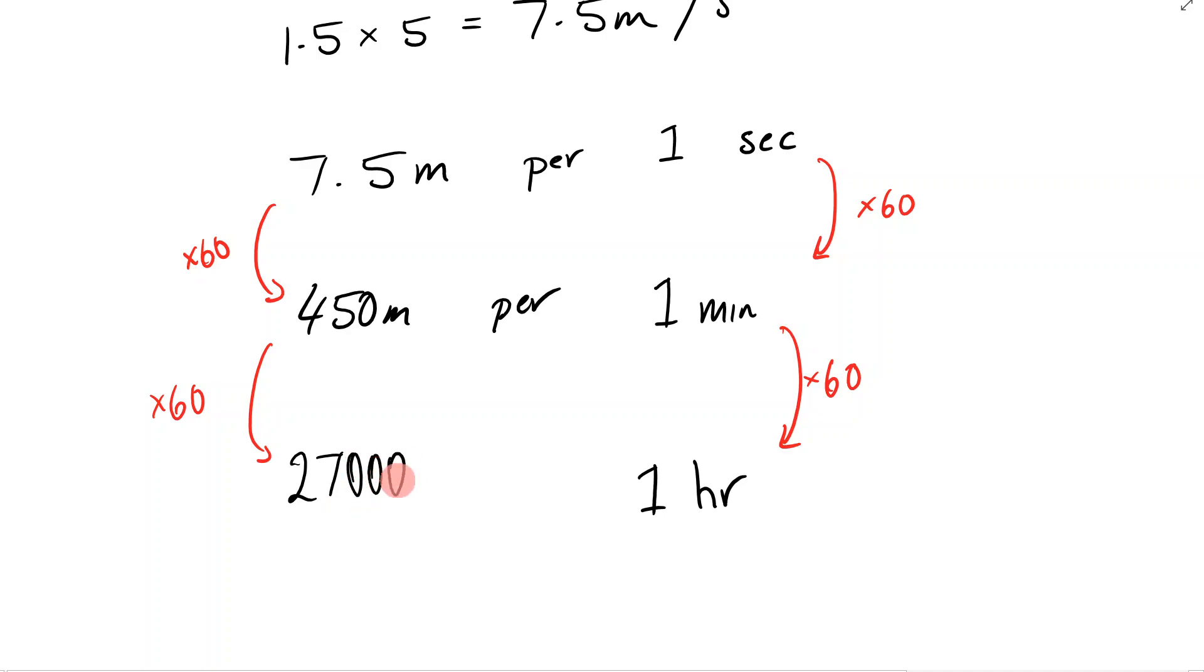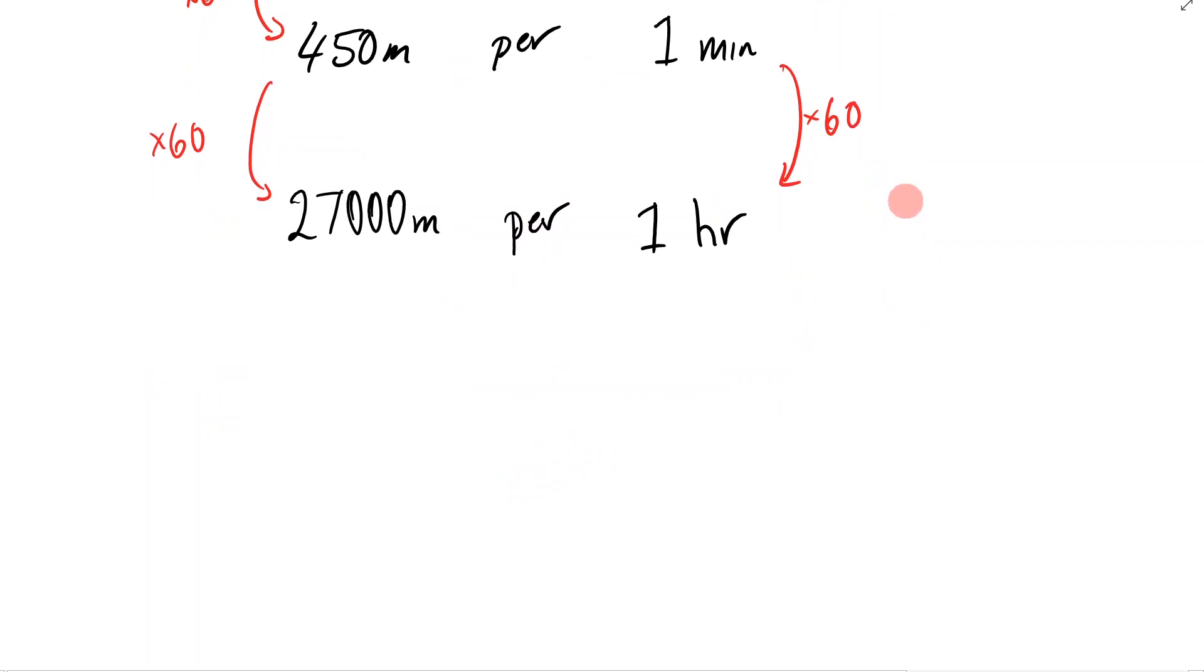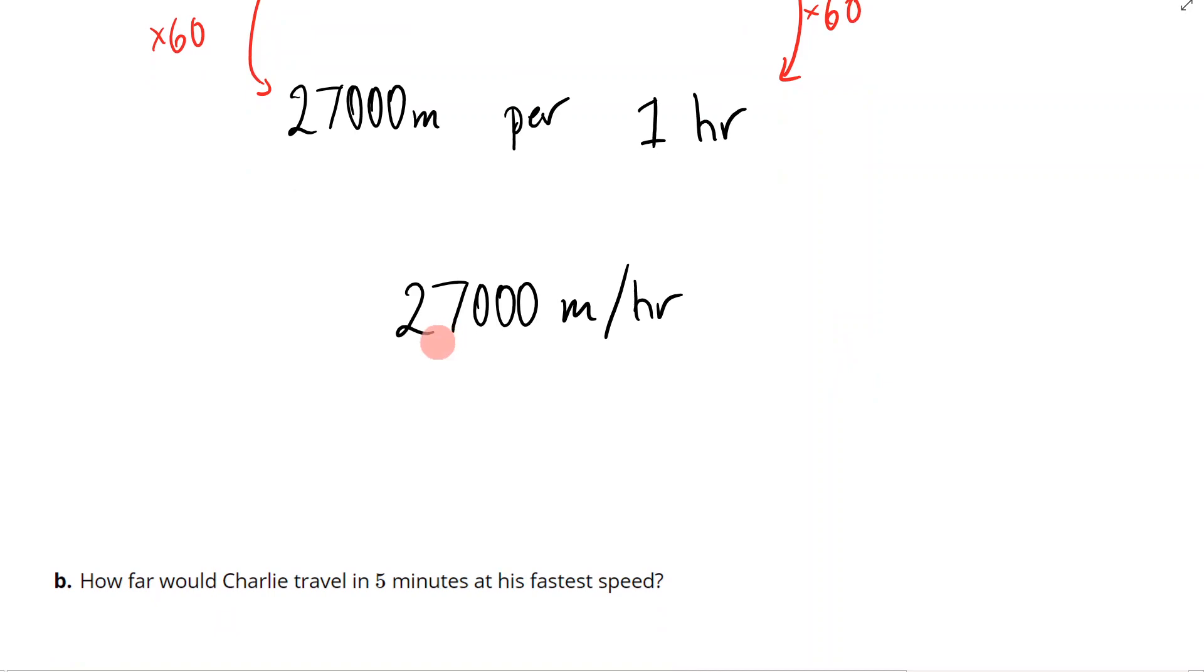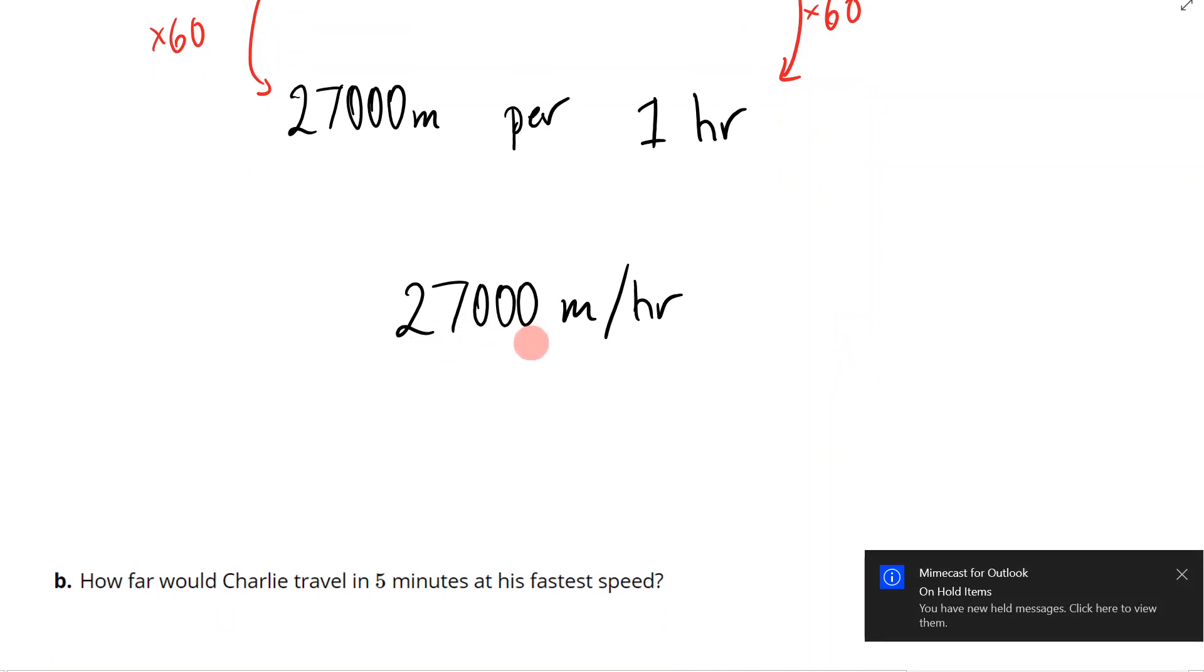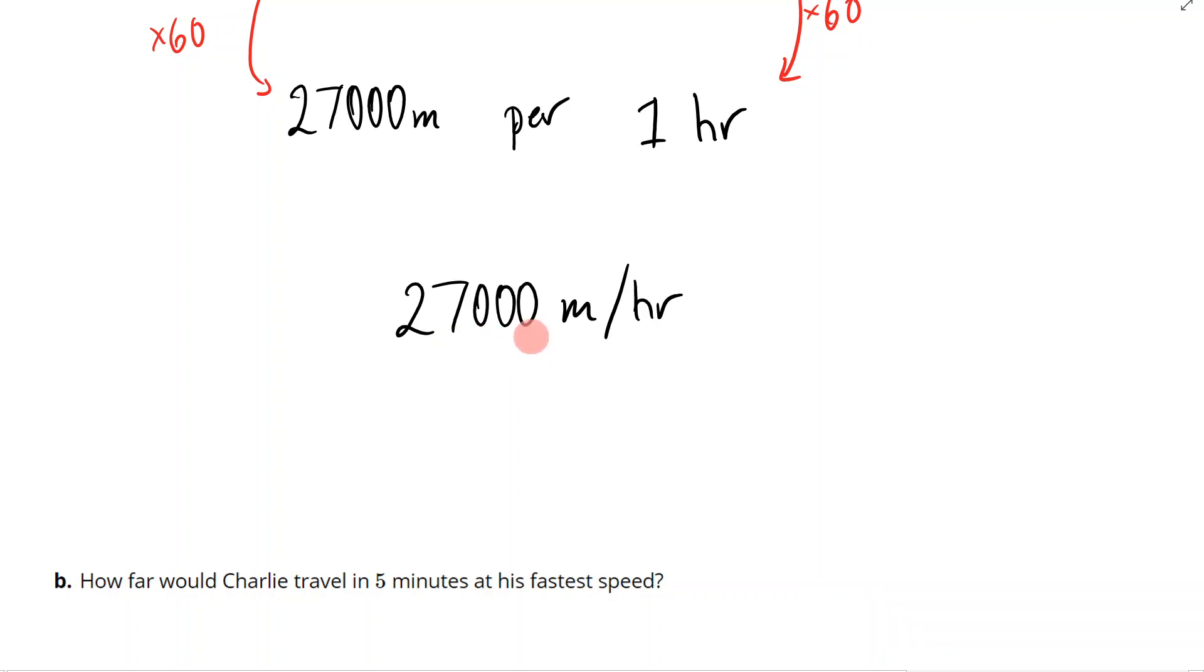27,000 meters per hour. If I was to write that as a speed, it would be 27,000 meters per hour. Now I need this to be kilometers. Well, if it's 27,000 meters, I know to get this into kilometers I'll divide by a thousand. So that means I'm going to be left with 27. So I just divided by a thousand there, and that's my answer: 27 kilometers per hour.